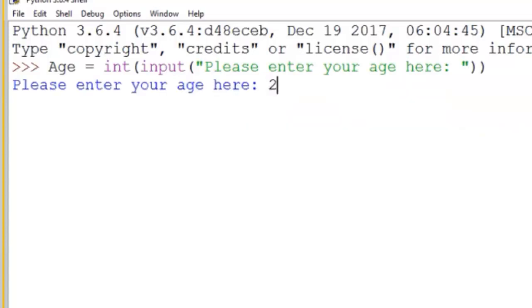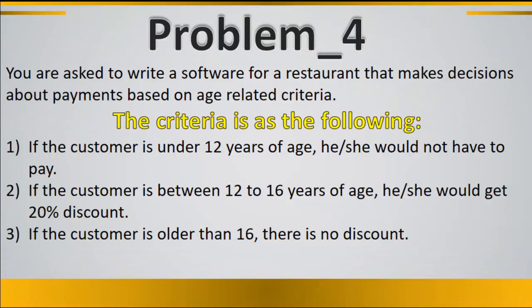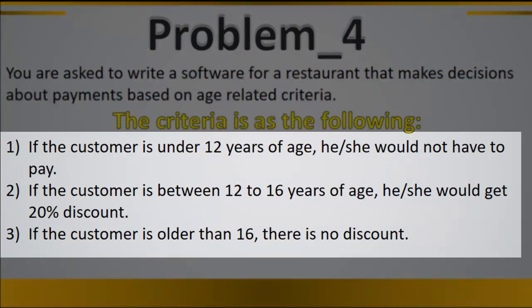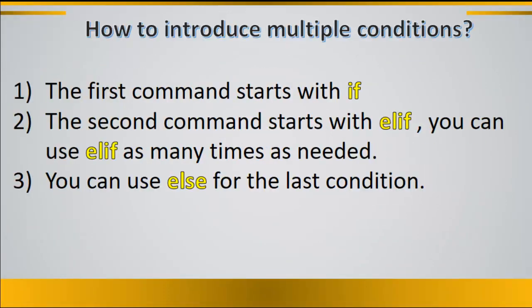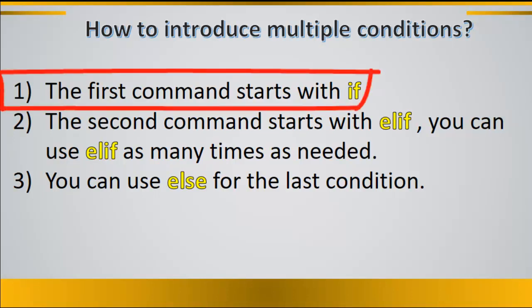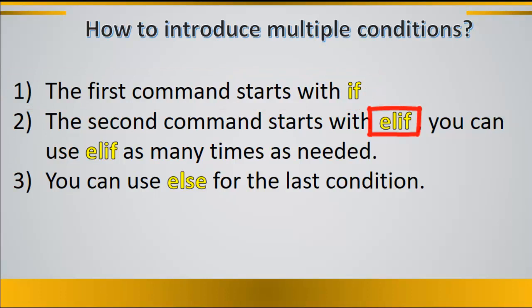We can combine all of this in a restaurant payment example. You are asked to write software that makes decisions about payments based on age: if the customer is under 12 years of age, they don't have to pay; if the customer is between 12 and 16 years of age, they get a 20% discount; if the customer is older than 16, there is no discount. This is a multiple-condition example. The first command starts with 'if', the second with 'elif' — meaning if the above is not true, run this code — and you can use 'else' at the end.